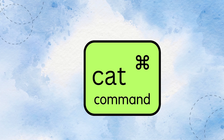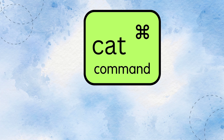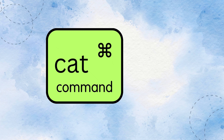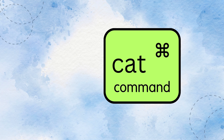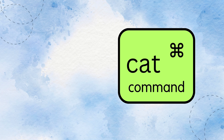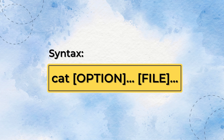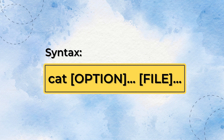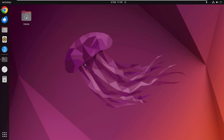The cat command prints the contents of the specified file. It comes from the word 'concatenate.' Generally, this command reads the contents of the files given as arguments and prints them serially on the terminal. The syntax is simple: cat is followed by an option and a file name. The option is optional — if you only input the file name, you will still get the output.